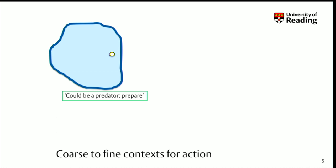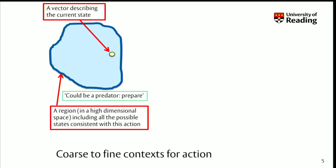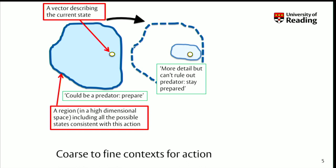So what can the brain do? What I'm drawing here is that yellow dot — a vector, just like Greg described, describing the current state. That's like the output of your neural network, the output of the brain. That whole blue region is a part of a high-dimensional space — specifically the part that includes all the possible states consistent with that action. In this case, there could be a predator out there — prepare. The current state is a subset of that, but there are many other states compatible with that action. Then you get more information in and say: I've got more detail about the world, but I can't rule out that there's a predator there. Stay prepared.